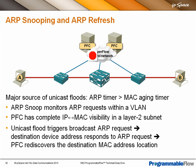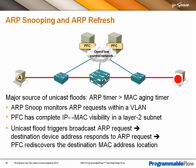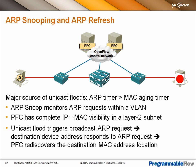One major source of unicast flooding occurs when the ARP timer is bigger than the MAC aging timer and you have unidirectional traffic. MAC addresses expire in the controller and in the switches, and because A is only sending traffic to B and not receiving any traffic back — say B is a syslog host — no one knows where B is. But because the ARP timer hasn't timed out yet, A won't send another ARP request, so no one knows where B is, and we're back to unicast flooding.